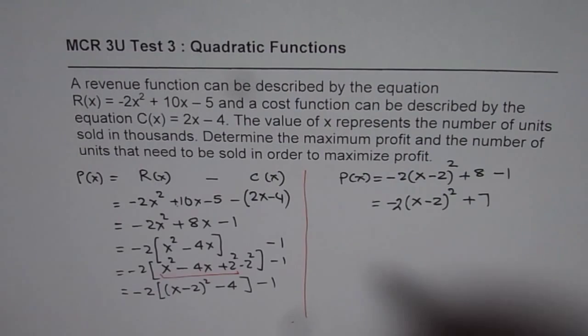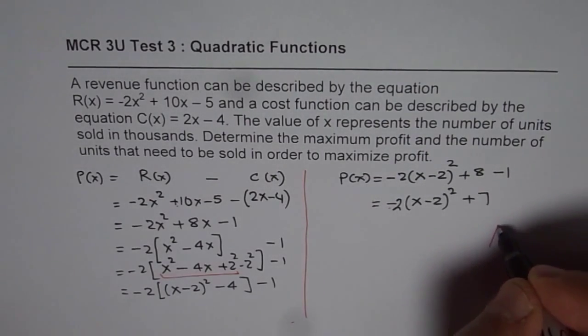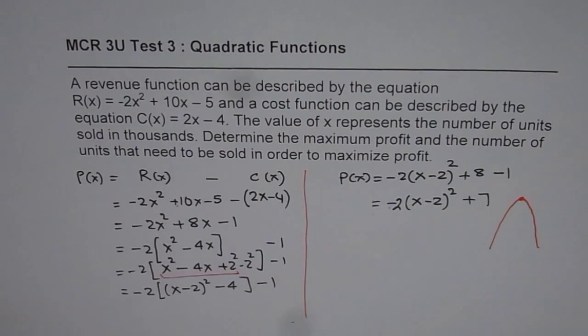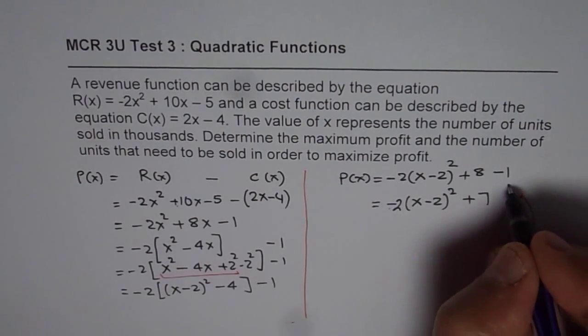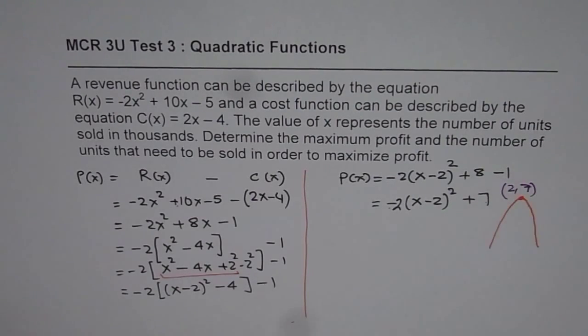Now this is a parabola which is opening downwards, kind of like this, where the peak or the vertex will be at x equals 2 and profit as 7. Is that okay? So that is the position of the vertex.